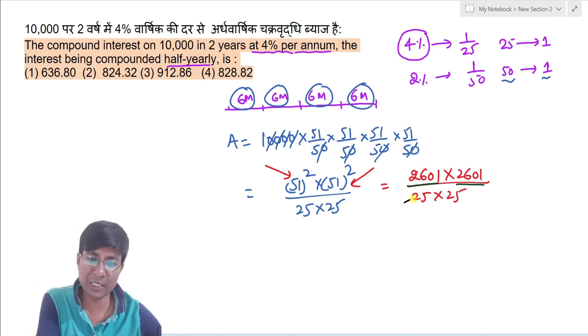Dekho, isko aap simple tarike se divide kar sakte ho. Aapko pata hai, 25 into 4 kitna hota hai, 100. Toh yaha pe 26 hundred hai, toh 26 into 4, utna 25 hoga. Toh simply aap likh hoga, 104.